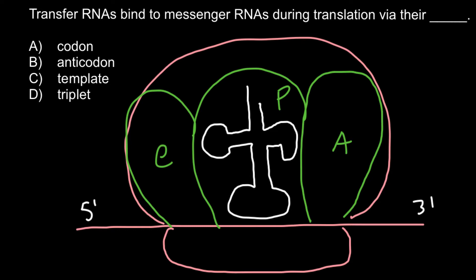First of all, this is the beginning of the messenger RNA. Messenger RNA always grows from the 5 prime end to the 3 prime end, and that means the ribosome would bind close to the 5 prime end and move in the direction of the 3 prime end.